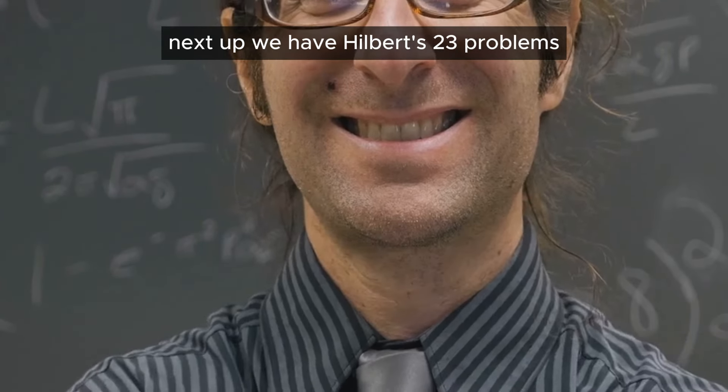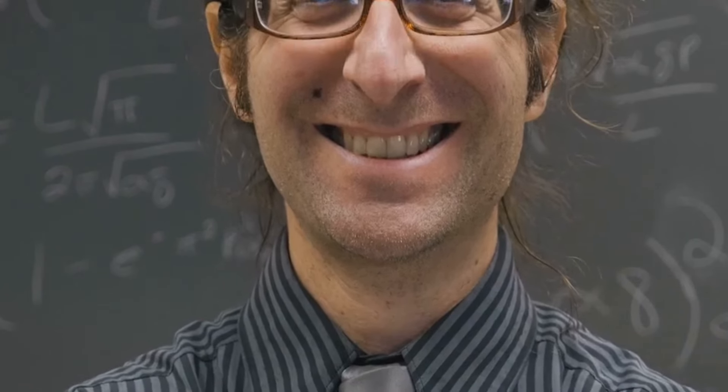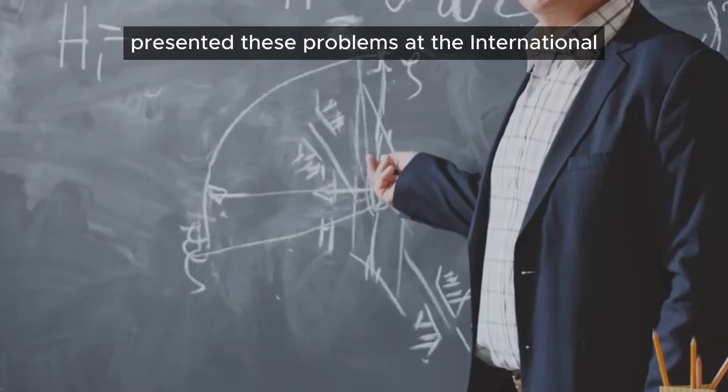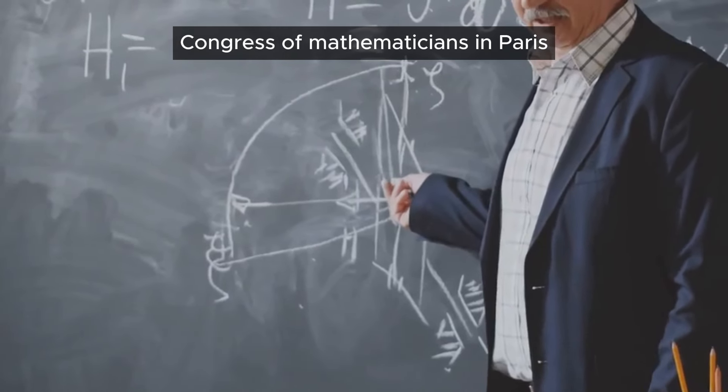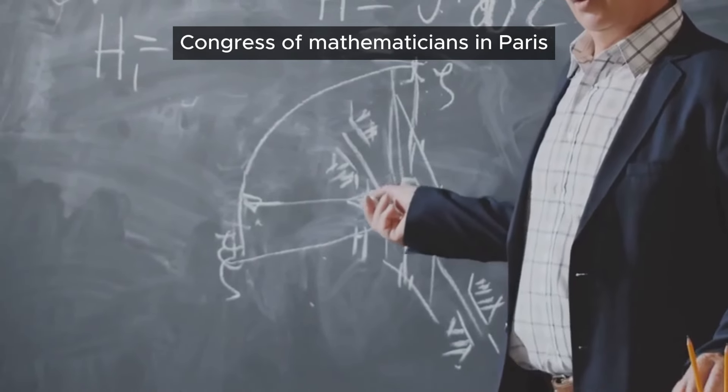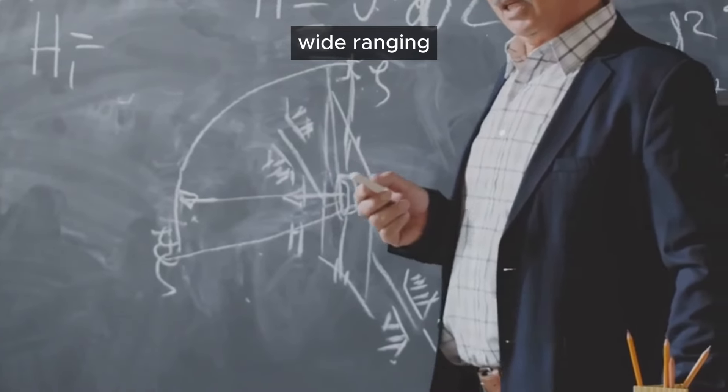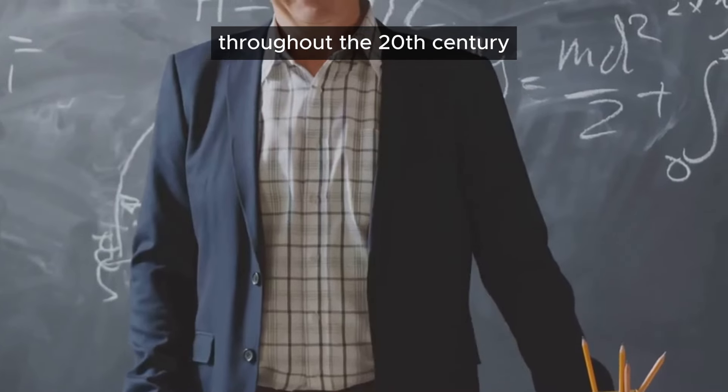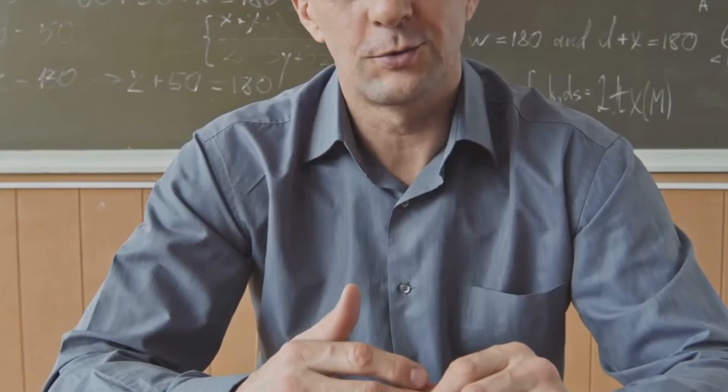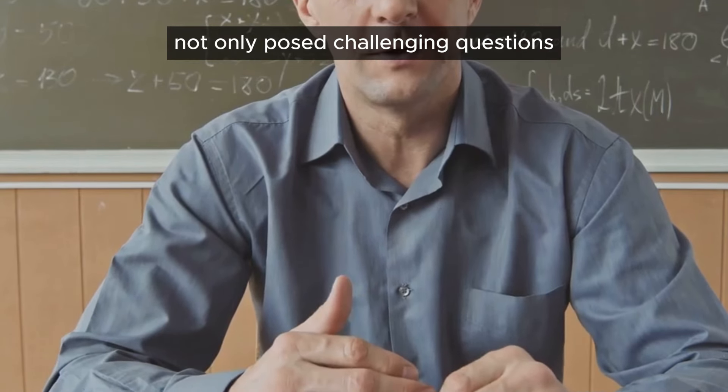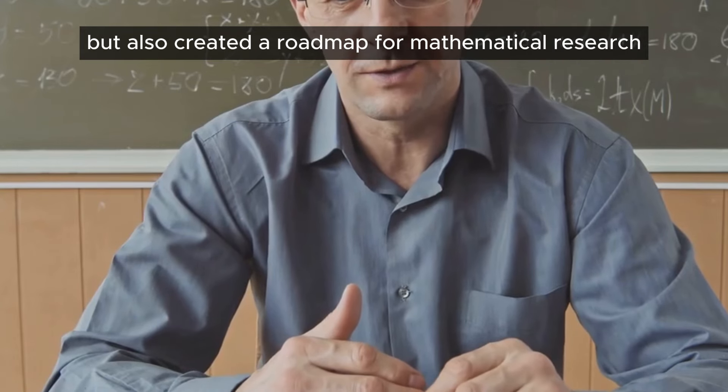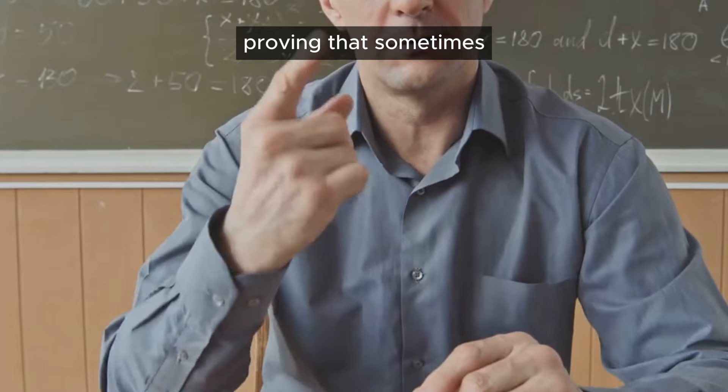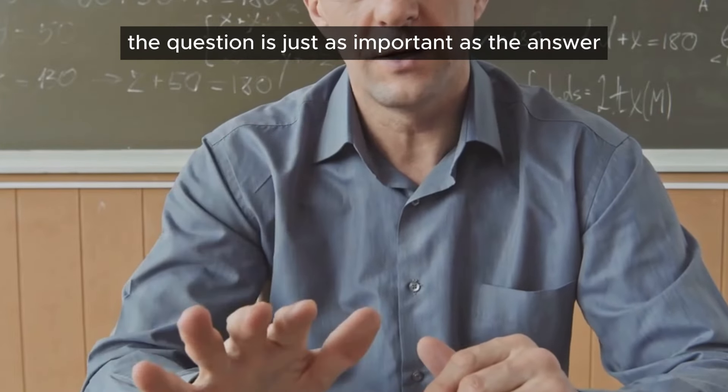Next up, we have Hilbert's 23 problems. In 1900, German mathematician David Hilbert presented these problems at the International Congress of Mathematicians in Paris. These problems, wide-ranging and deeply complex, have guided much of the progress in mathematics throughout the 20th century. Hilbert's problems not only posed challenging questions, but also created a roadmap for mathematical research, proving that sometimes the question is just as important as the answer.